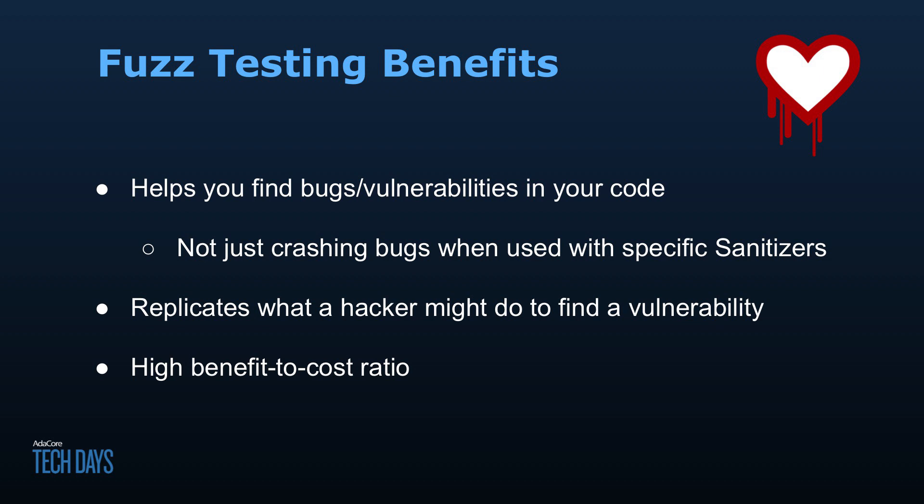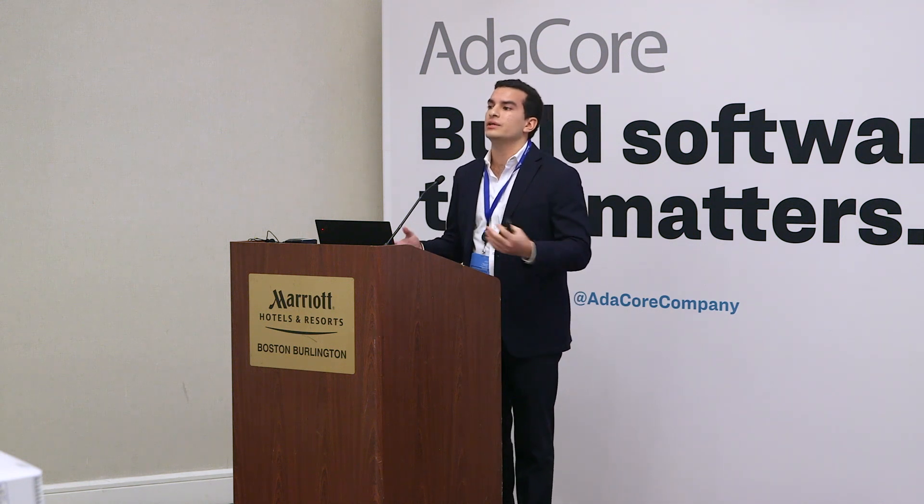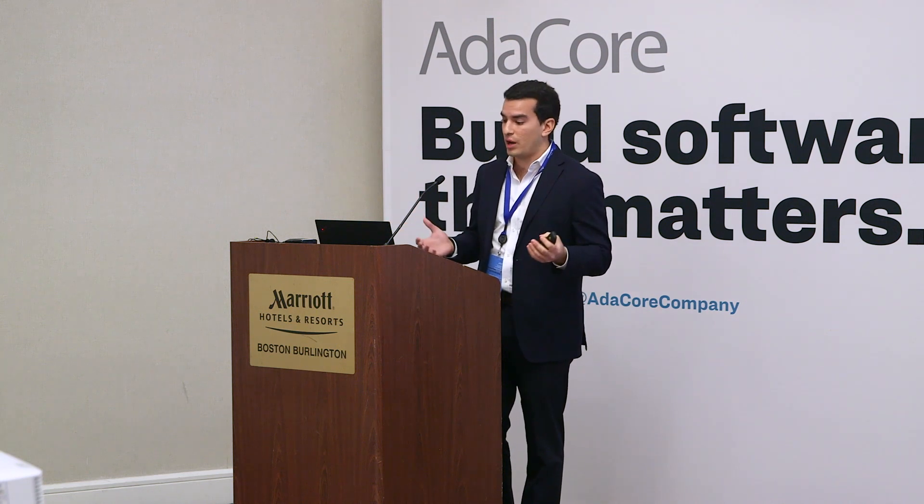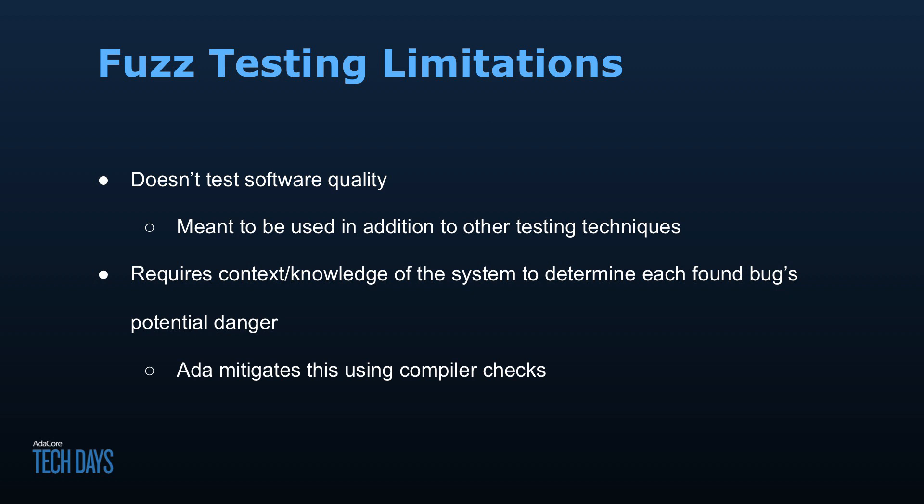If done correctly, fuzz testing has a lot of potential benefits. First and foremost, it helps you find bugs in your code that other testing methods may not discover. I have a bleeding heart symbol on this slide representing Heartbleed — a high-profile buffer overflow exploit found in OpenSSL in 2014. Analysis showed that had they fuzzed their code with a specific sanitizer, it would have been much more likely they would have found Heartbleed a lot earlier.